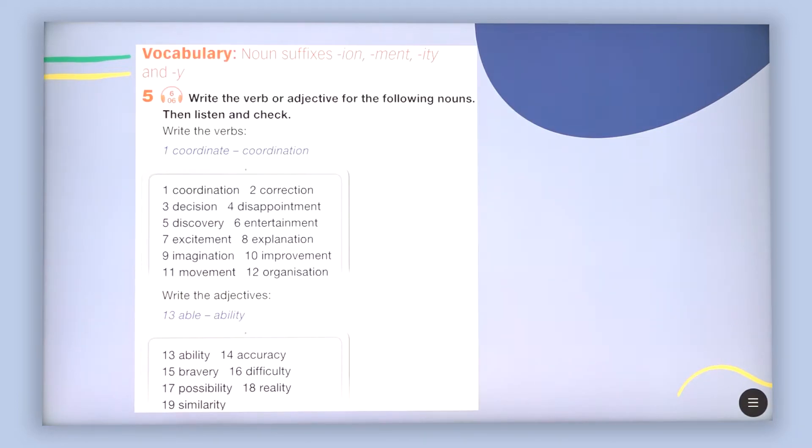Vocabulary. Noun suffixes, as you can see, it's I-O-N, M-E-N-T and I-T-Y and also Y. So it means that you are going to have nouns created with these suffixes. As below you will find some examples. Write the verb or adjective for the following nouns. Then listen and check.